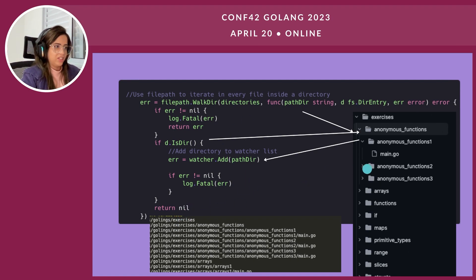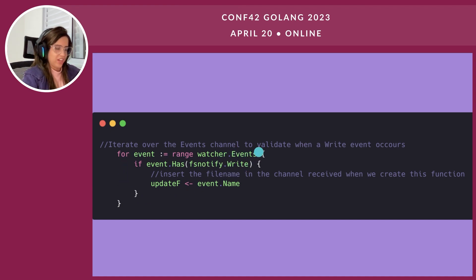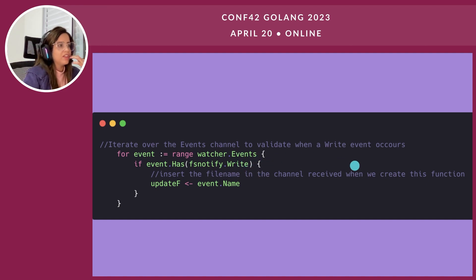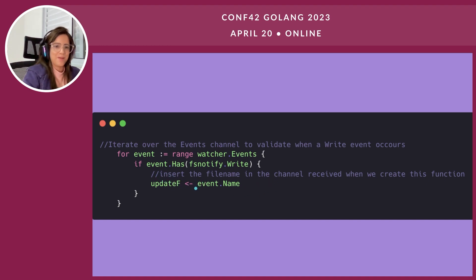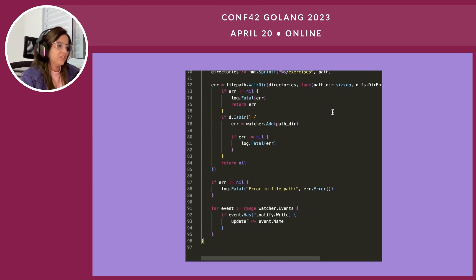In the terminal, when I added a print statement inside the Walk, it looks like the picture shown here. Then we iterate over the watcher's event struct and check every change to see if the event notified by the system was a write event. If it is a write event, I insert the file name into the channel that I passed as a parameter to my function. So now we have our function to watch all directory events.